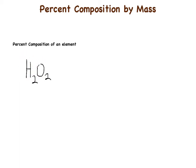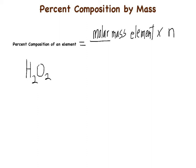Hydrogen will have a certain percent composition by mass and oxygen will have a certain percent composition by mass. The equation is: percent composition of an element equals the molar mass of that element times the number of atoms of that element in the compound, divided by the molar mass of the compound.